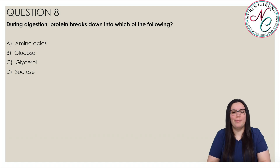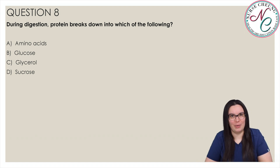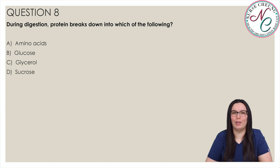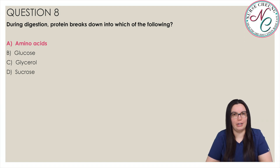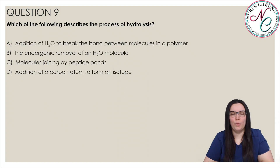Question 8: During digestion, proteins break down into which of the following? Is it A) Amino Acids, B) Glucose, C) Glycerol, or D) Sucrose? The correct answer is A) Amino Acids. During digestion, proteins break down into amino acids, carbohydrates break down into sugar or glucose, and lipids break down into fatty acids and glycerol.